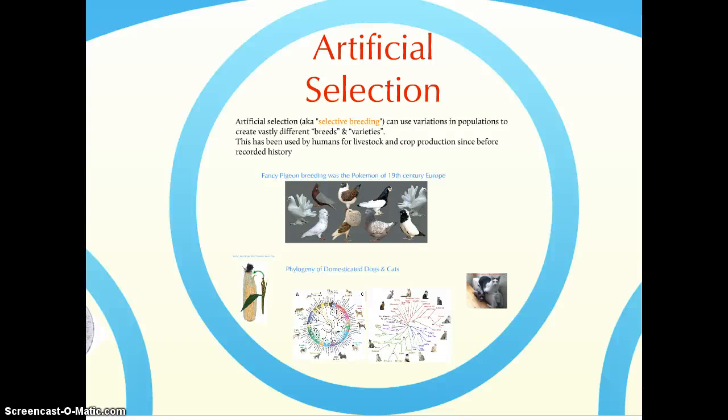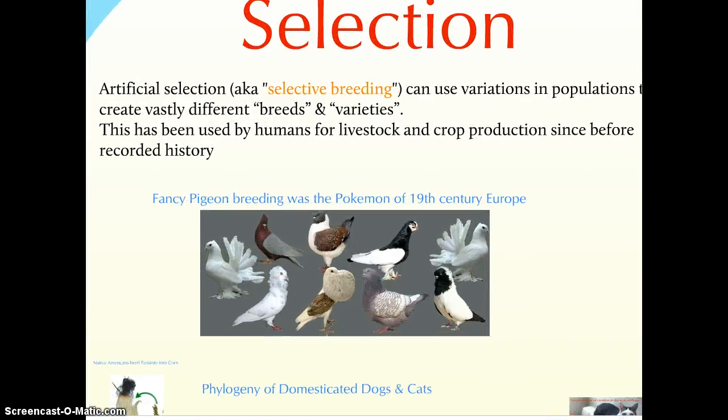Interesting side note: the genes that control the number of rounds of cell division and the development of the neurons in the brain - humans and chimps differ by, I think, one or two rounds of cell division. So in terms of number of neurons in our brain, the numbers are quite different because it's like 26 or 27 rounds of cell division, but the number of rounds of cell division is quite similar. So small changes in genotype can have significant phenotypic impacts.